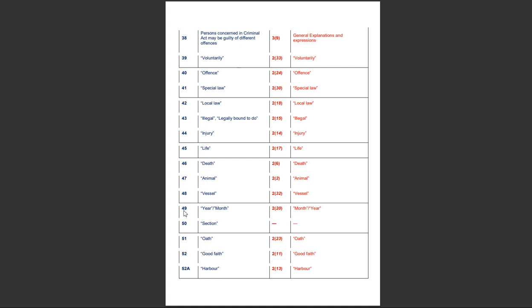Section 49 of the Indian Penal Code defines the terms 'year' and 'month', whereas section 2, clause 20 of the BNS defines the terms 'month' and 'year'. Section 50 of the IPC defines the term 'section'. Section 51 of the Indian Penal Code defines the term 'oath', whereas section 2, clause 23 of the BNS defines the term 'oath'. Section 52 of the IPC defines the term 'good faith', whereas section 2 of the BNS defines the term 'good faith'.